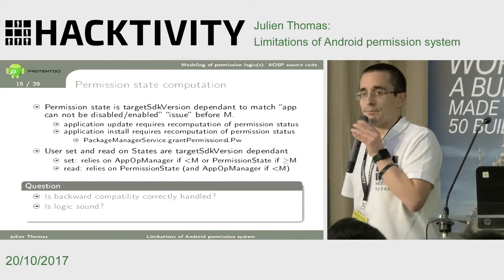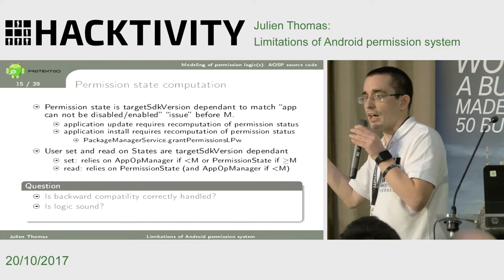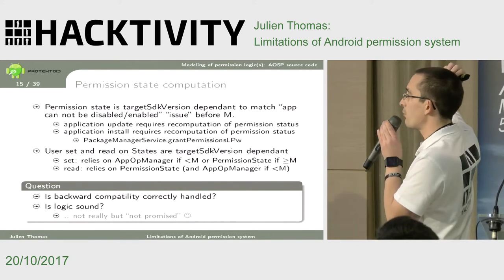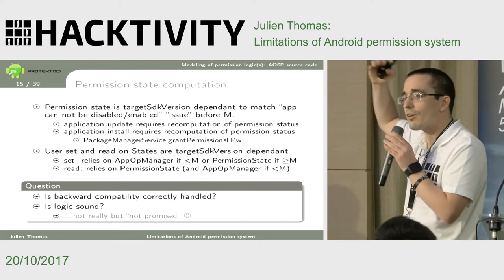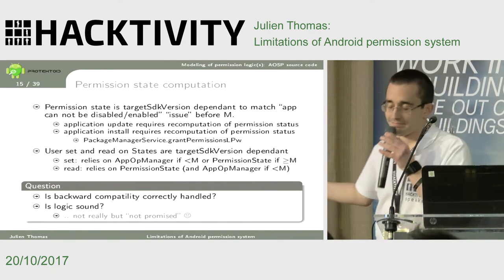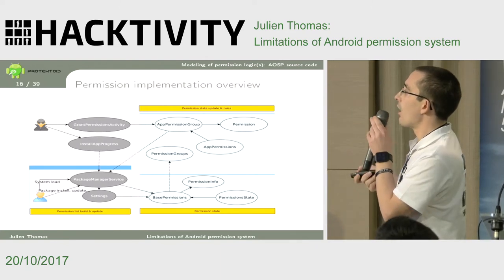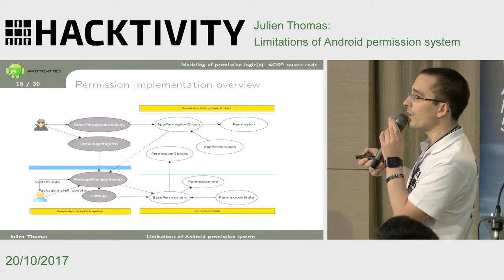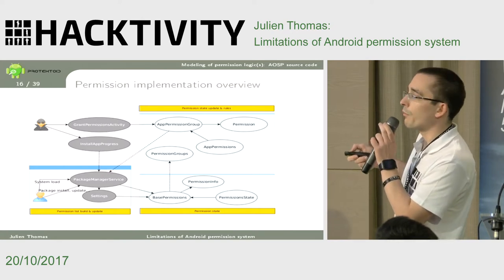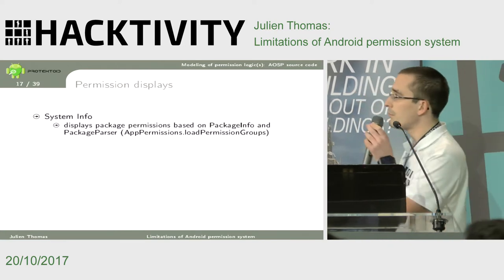If two applications share a single user ID but target different API levels — one expected to have everything granted by default and one that should only get normal permissions — they converge to the same permission set. How does Android handle that? Interestingly, Google's feedback was essentially 'we never promised' strong security in this scenario, which I'll let you judge.